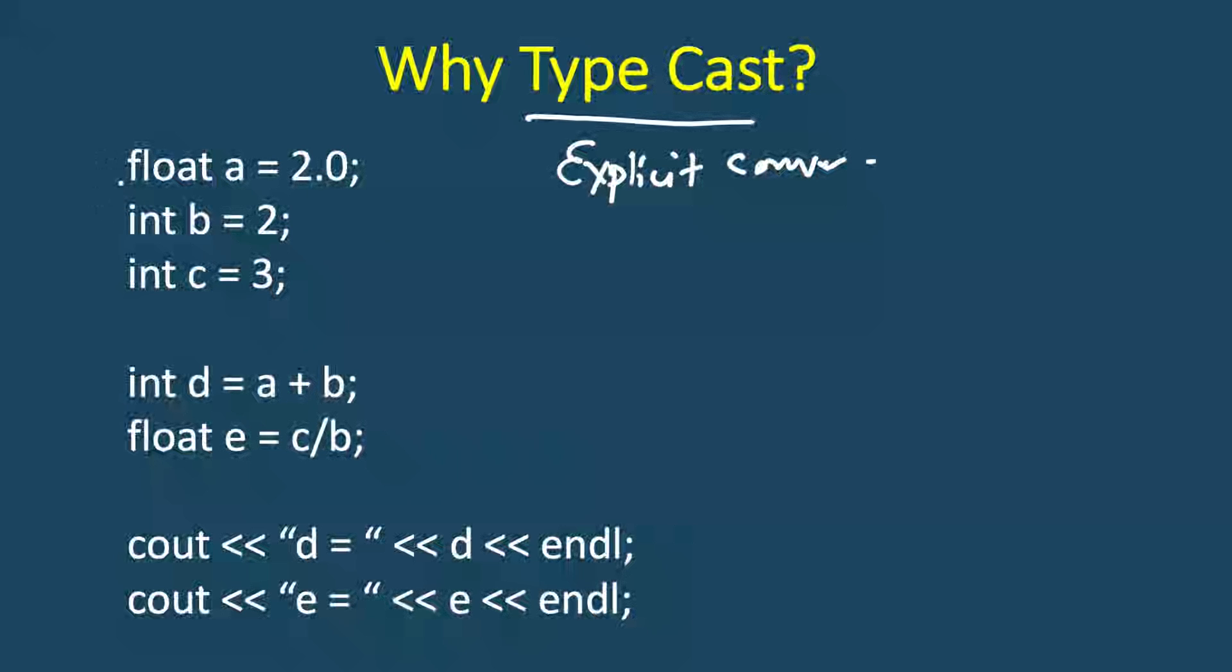Let's take one example. Let's say a is a float and its value is 2.0, b is int with value 2, c is an int with value 3, and here d is an int and we are adding a and b. So a was float and b is int.